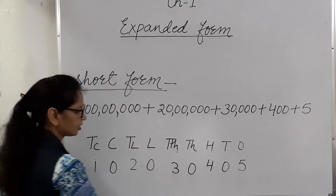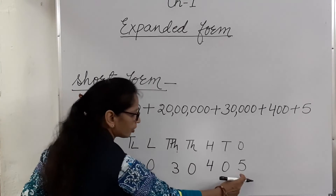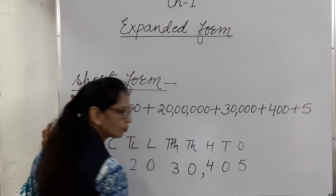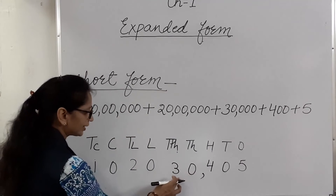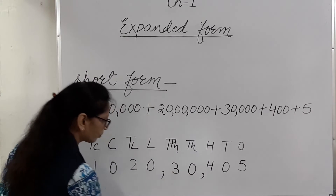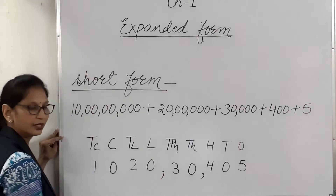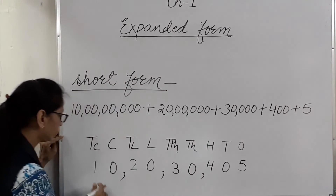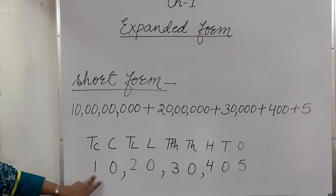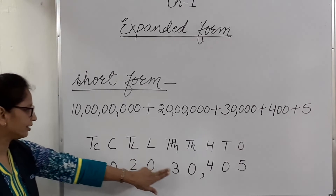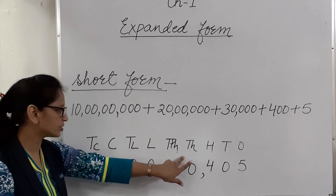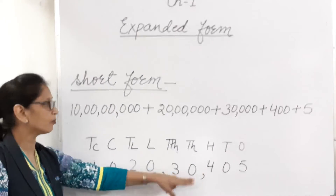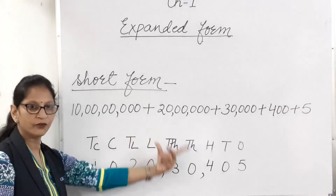Now we will put commas. Ones, tens, hundreds — we will put a comma here. Thousands, ten thousands — we will put a comma here. Lakh, ten lakh — again we will put a comma here. And the number reads: ten crore, twenty lakh, thirty thousand, four hundred and five. And this is the short form of the expanded form.